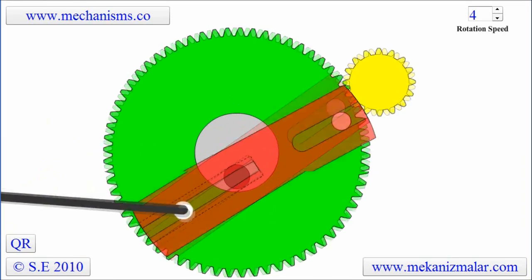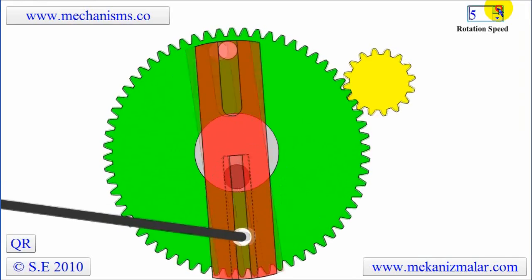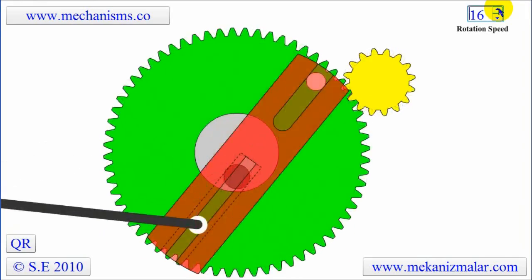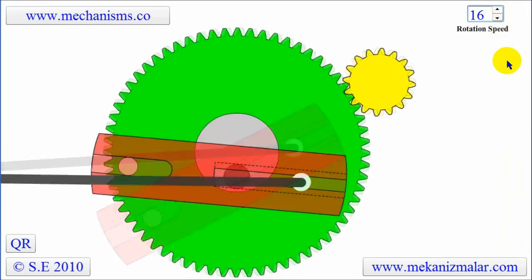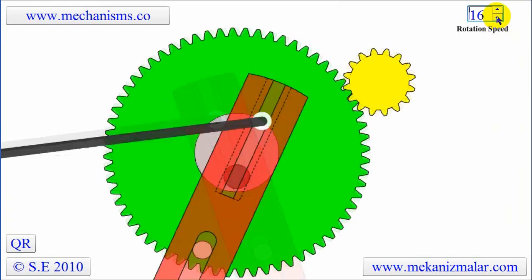Let's increase the rotational speed and observe how the black link makes the forward stroke slower than the backward stroke. To understand how this is achieved, we will bring the rotation speed to one.